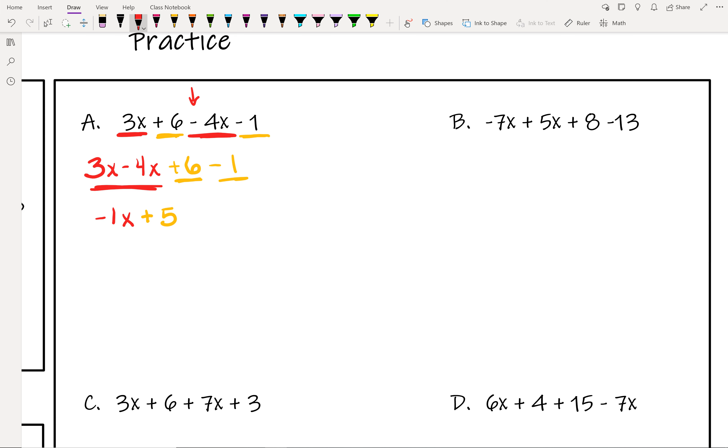This negative 1x, whenever we have a variable with a coefficient of 1, it doesn't need to be there. It can be, but it doesn't have to be. So we could also write this as negative x plus 5. Both of these are correct answers.